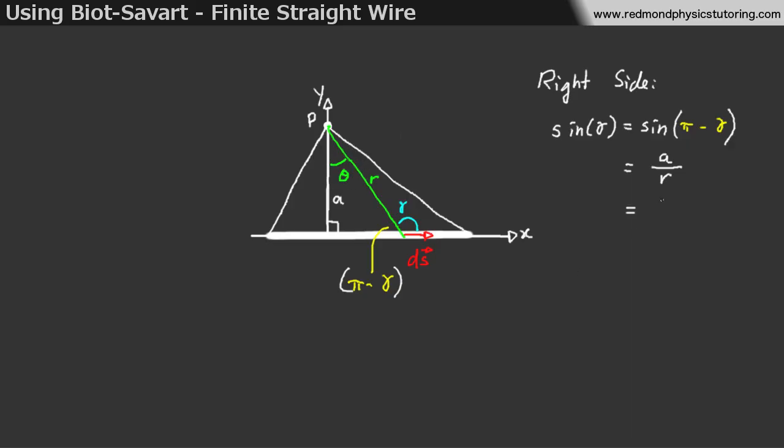If we look at theta, as defined, the inside of the triangle from the vertical line to the green line r, which is the distance from dS to point P, cos of theta is also equal to a over r. So, we can write that sine of gamma is equal to cos of theta.